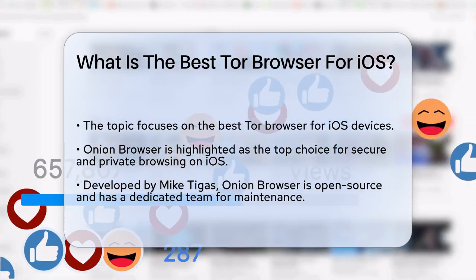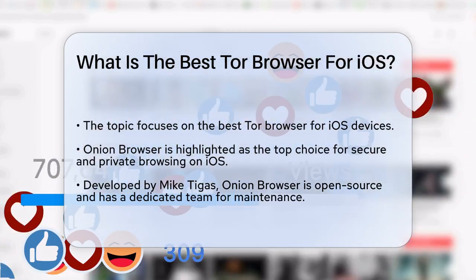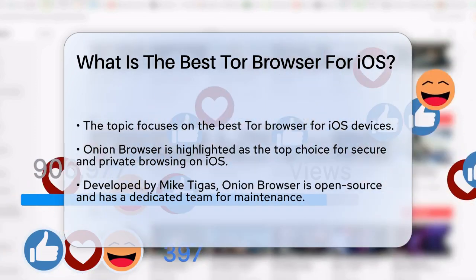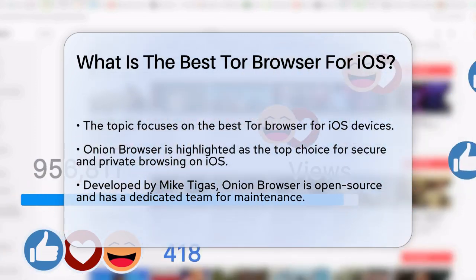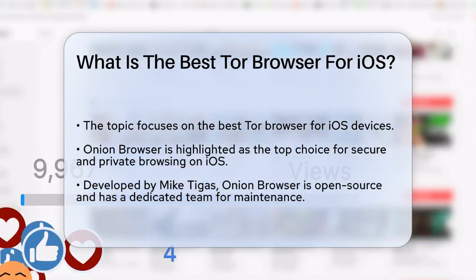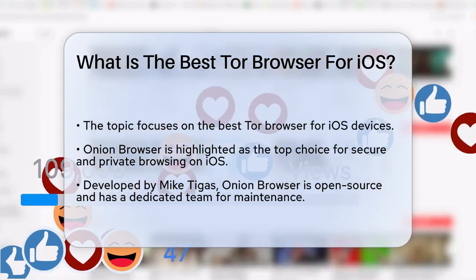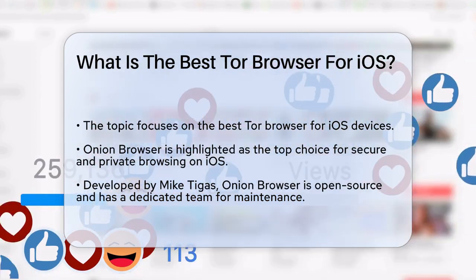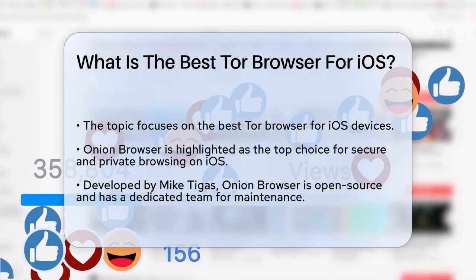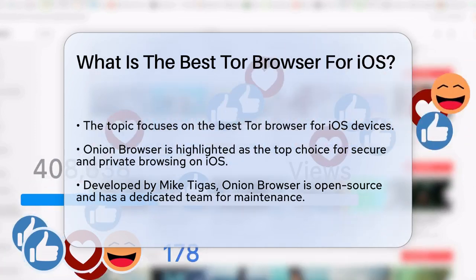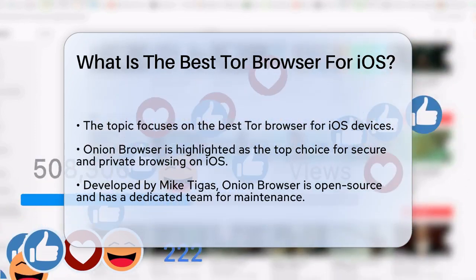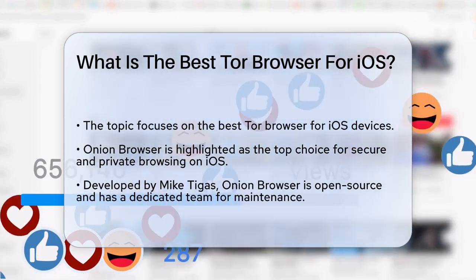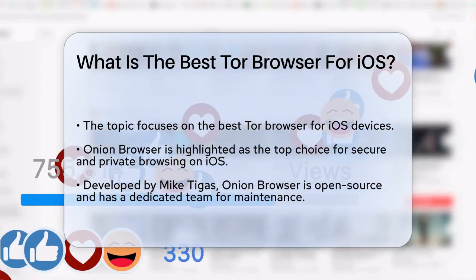When it comes to Tor browsers on iOS, one name stands out: Onion Browser. This app is the officially endorsed way to connect to the Tor network on iOS, and it's been around for a while. Created by Mike Tegas, who has a background in investigative journalism and currently advises at the FTC, Onion Browser is an open-source app that has been maintained and developed by a team of dedicated maintainers.